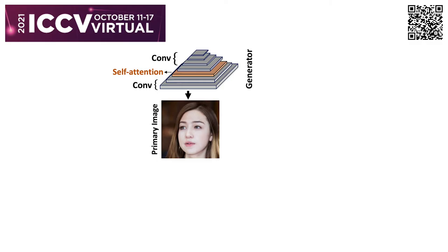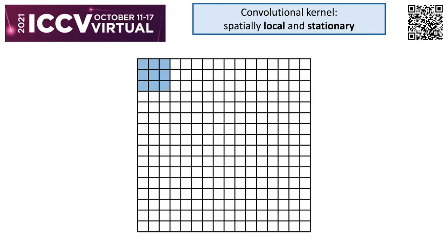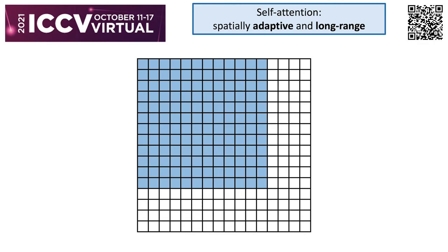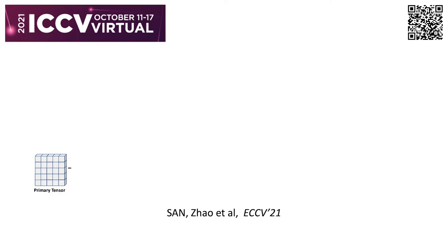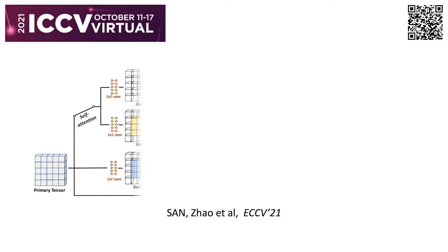Our second contribution comes with the architectures, and it first concerns the generator. Because attention modules have shown improvements in recognition tasks but are still missing in the state-of-the-art StyleGAN2 generator, we are naturally curious how replacing one layer of convolution with self-attention in the generator would perform. The motivation is clear: the convolutional kernel is spatially local and stationary, while the attention kernel is spatially adaptive and has a long range. Therefore, we incorporate the current state-of-the-art self-attention module into the generator.